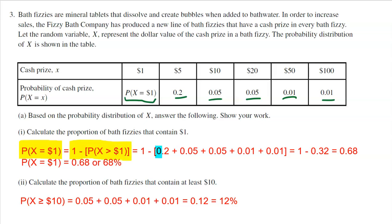So I'm literally going to combine the 20%, 5%, 5%, 1%, 1% for everything that is greater than $1, and then of course I have to do 1 minus that. So adding up everything that's there, you get 0.32. 1 minus 0.32 is 0.68. So you got about a 68% chance of getting a $1 prize in your bath fizzy.